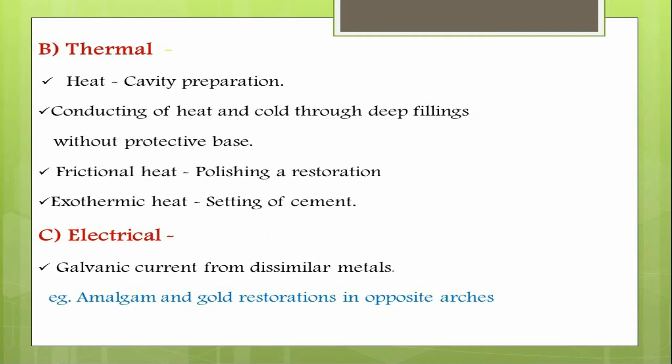Frictional heat produced during polishing of a filling or during setting of a cement can cause pulpal injury, though these injuries are usually reversible. Another reason is galvanic current produced from dissimilar metals; for example, if an amalgam restoration is present opposite a gold restoration, a galvanic current is produced in the presence of saliva acting as an electrolyte, which is transmitted through the metallic restoration into the pulp resulting in pulpal injury.